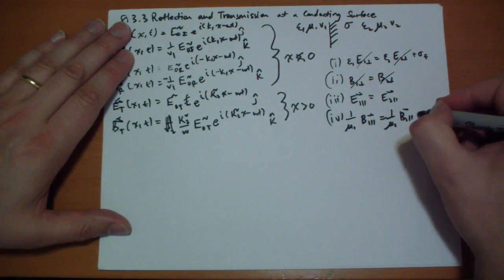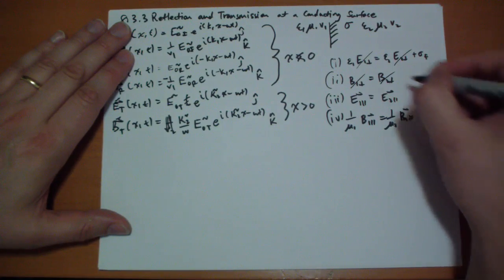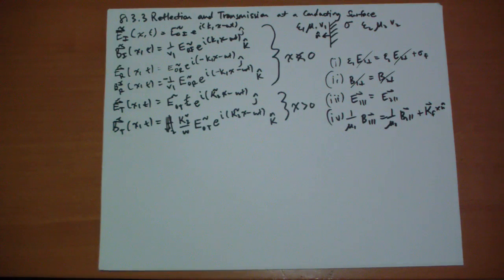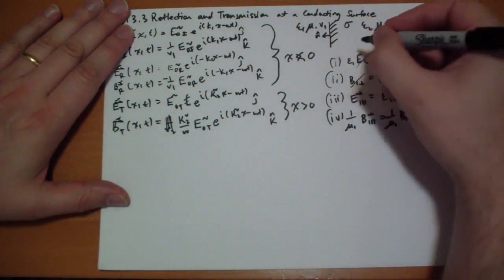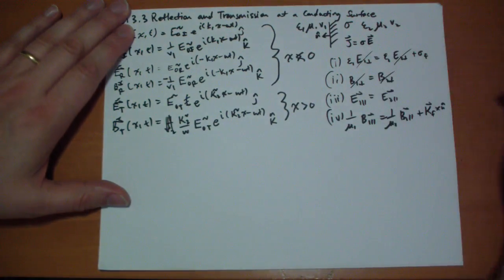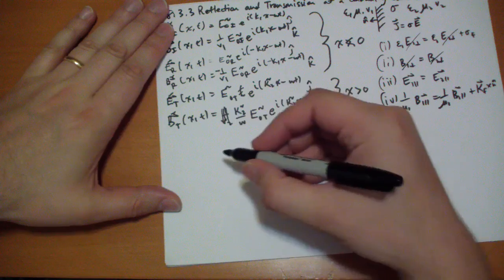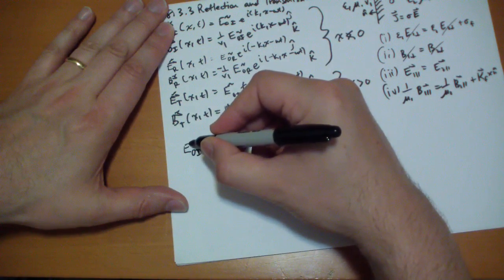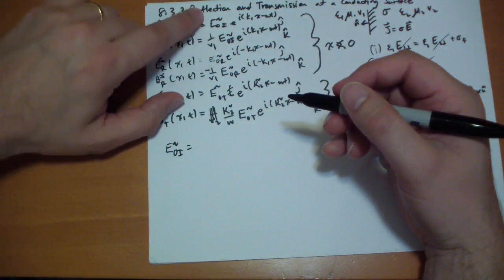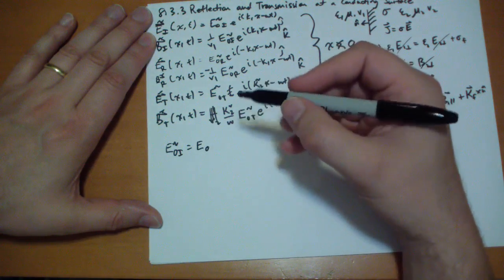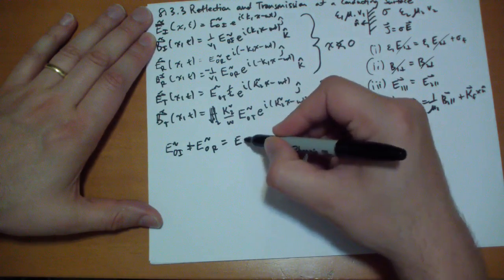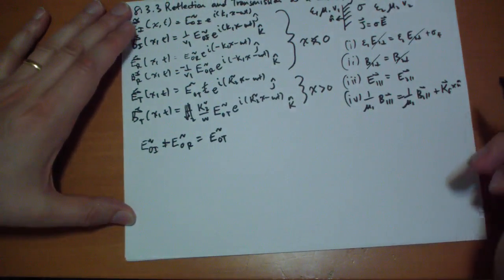And the fourth condition says that the parallel b fields, the parallel h fields, vary according to the surface current. So we write that out like this: 1 over mu1, b1 parallel vector has to equal 1 over mu2, b2 parallel vector, plus the surface current cross n-hat where n-hat is pointing this way. And it's somewhat easy to show that surface current has to be zero as well. If it weren't, then we'd have, since it's a conducting material, we'd have an infinite field there. And remember for the conducting materials we have the j vector is equal to sigma times the e vector. We have a current flowing in the direction of the electric field whatever that is.